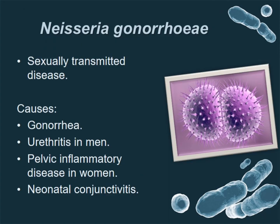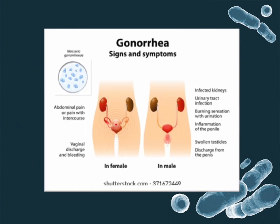This is a very important one — Neisseria gonorrhoeae. This bacteria is transmitted during sexual intercourse. Neisseria gonorrhoeae causes gonorrhea in both male and female, urethritis in males, pelvic inflammatory disease in women, and neonatal conjunctivitis in eyes, which is the white discharge from the eyes of newborn babies. The symptoms of gonorrhea are discussed in detail in the picture.